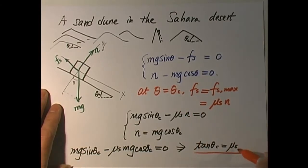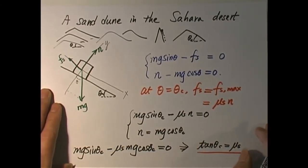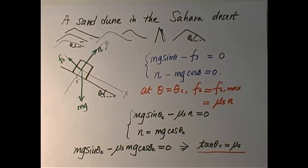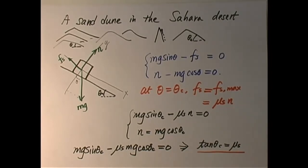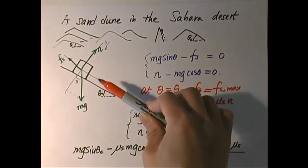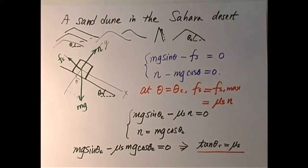For example, if mu_s equals one — by the way, that's a very important special case. You can check the table in chapter five for coefficients of static friction. You find that for rubber on dry concrete, which is basically the driving condition, mu_s is approximately equal to one. So when mu_s equals one, the critical angle is 45 degrees, because tangent of 45 degrees equals one.